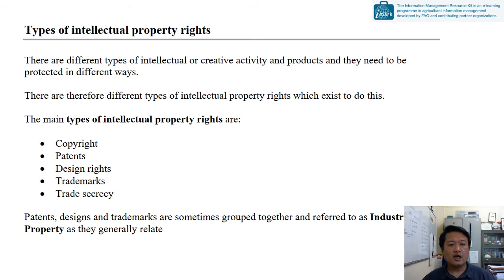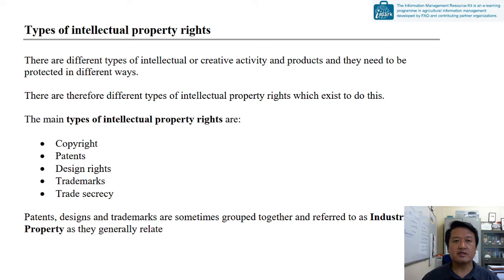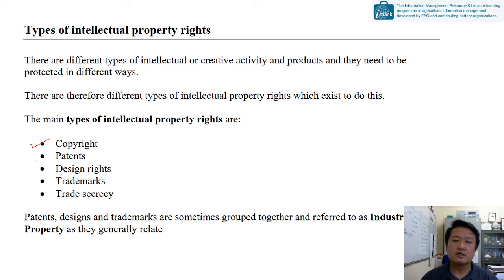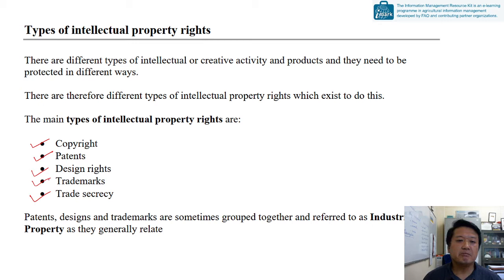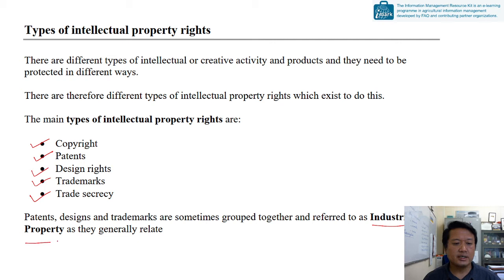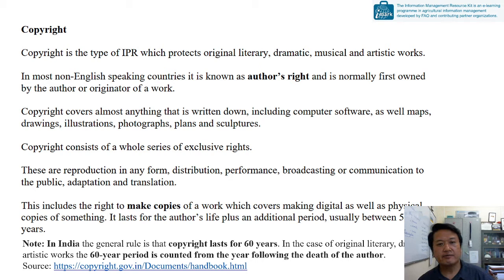There are different types of intellectual property rights. There are many minor types but the main types are: copyright — which is of most interest to us and will be dealt with in detail — then patents, design rights, trademarks, and trade secrecy. Patents, designs, and trademarks are sometimes grouped together as industrial property rights, as they are generally related to industries.